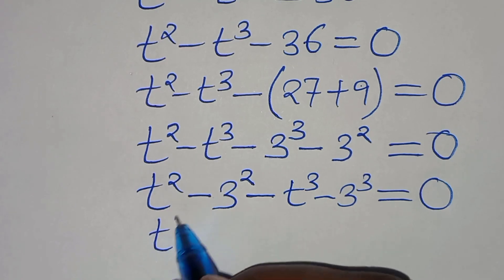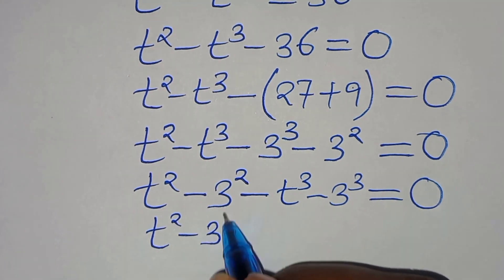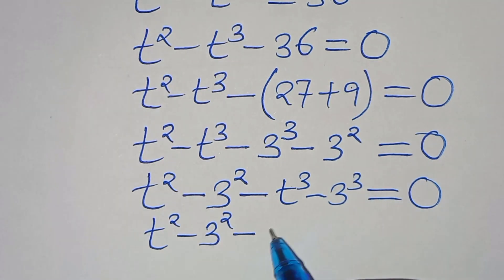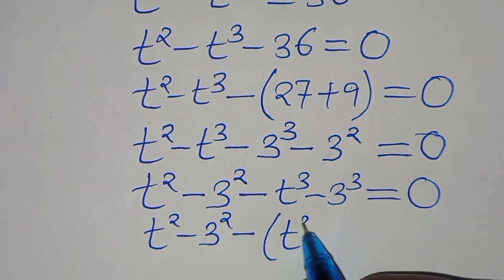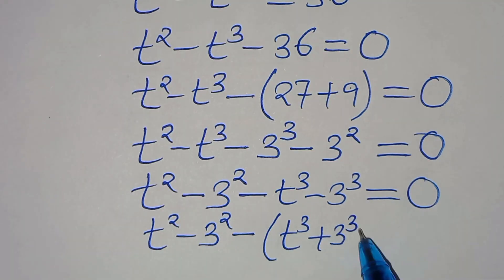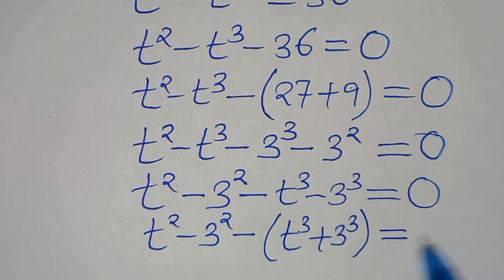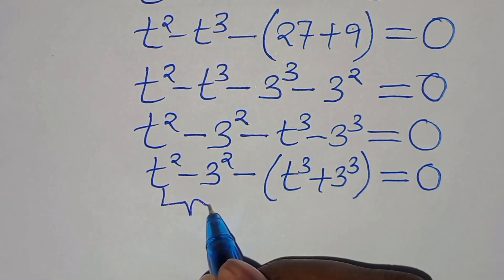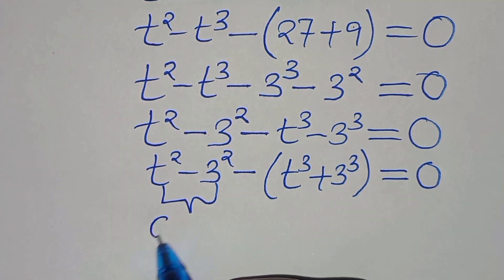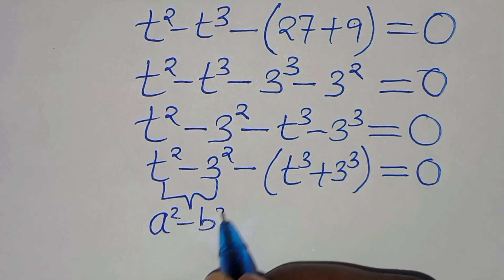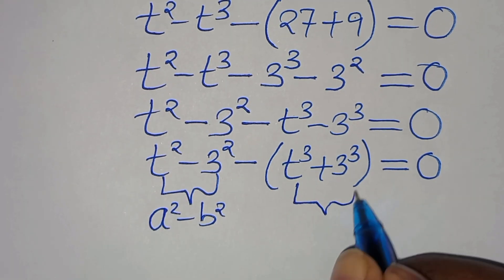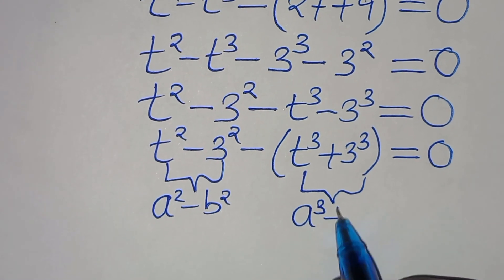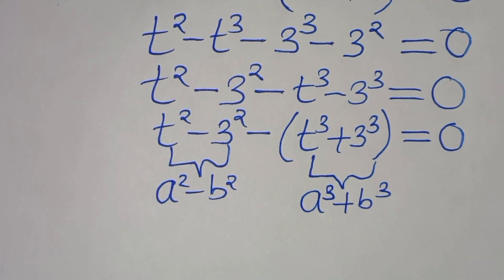From here we have t squared minus 3 squared, which is the difference of two squares, and then we subtract the expression t to the power of 3 plus 3 to the power of 3, which is the sum of two cubes. So we have two parts: the first part is the difference of two squares, expressed as a squared minus b squared, and the second part is the sum of two cubes, expressed as a cubed plus b cubed.